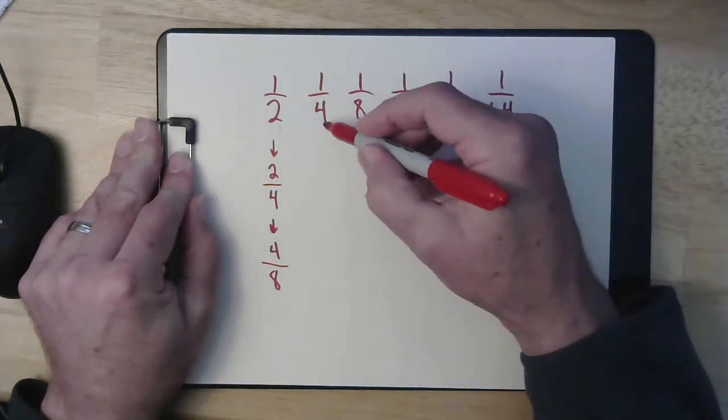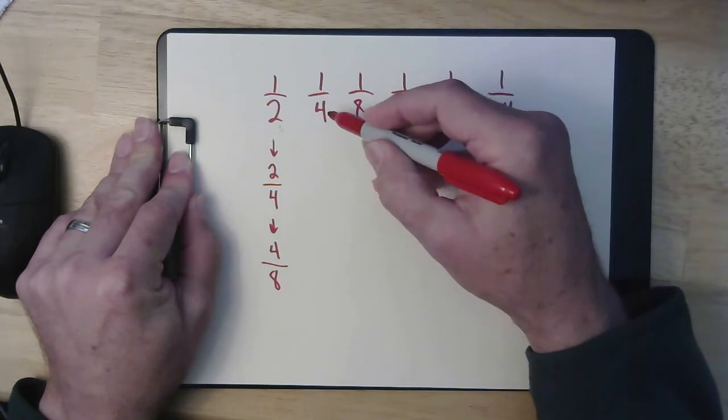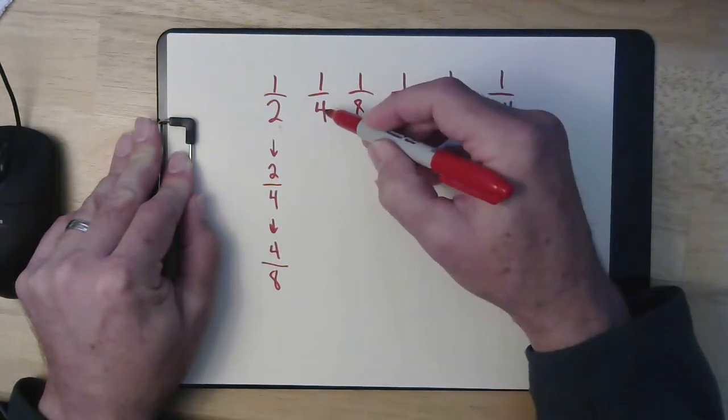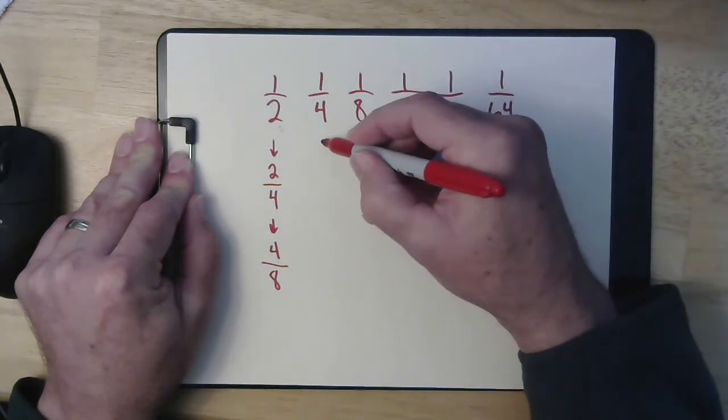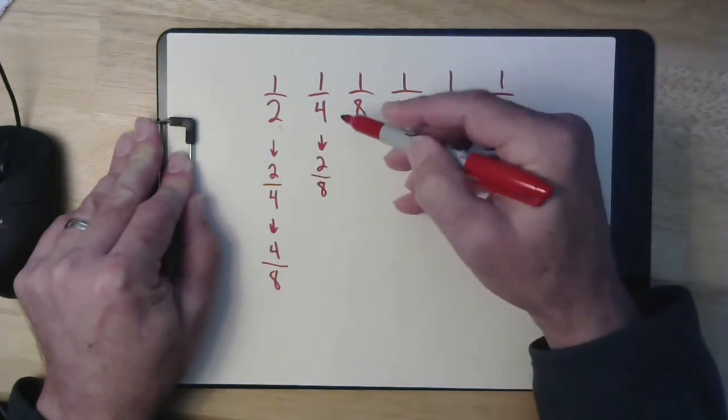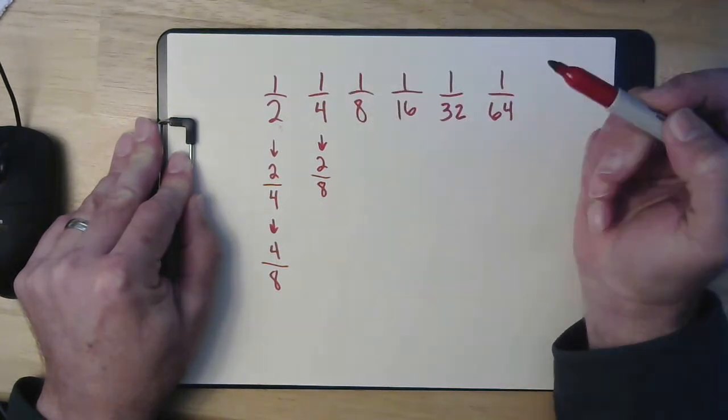So the same thing, if I want to look at a quarter and I want to see how many eighths there are in it, one quarter becomes two eighths. So I doubled the bottom, doubled the top.